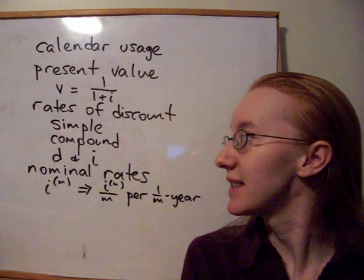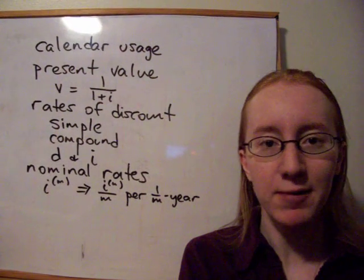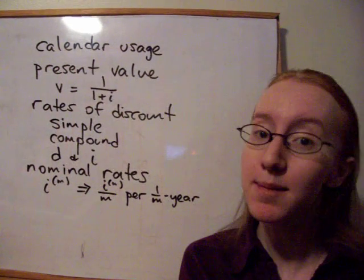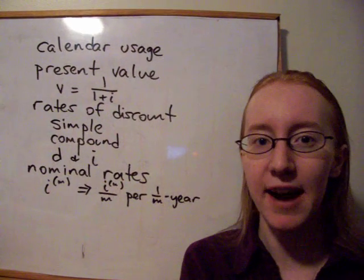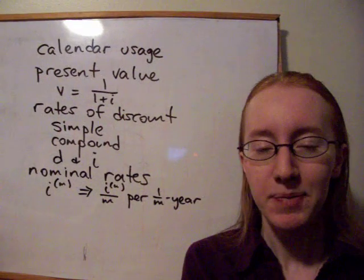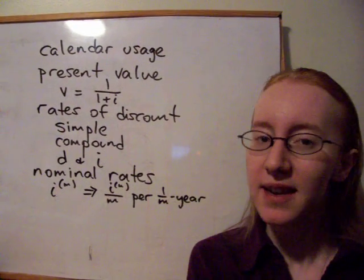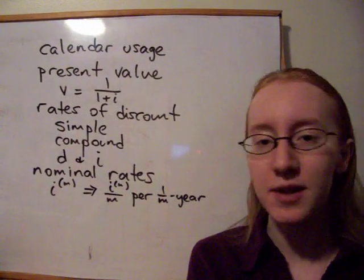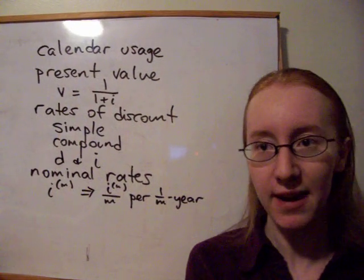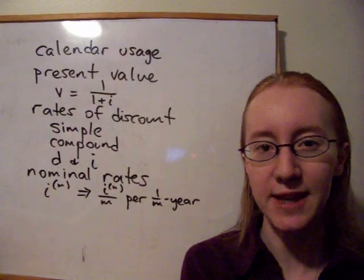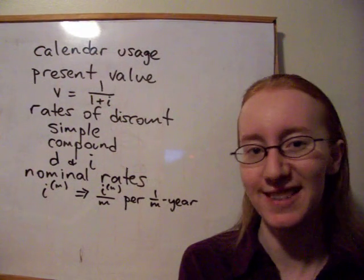So in that case, we have this relationship between D and I, and we actually developed a number of different relationships between D and I, and you have those in your notes. One of the ones that's most common is that D is equal to I times V. So it's I over 1 plus I. That's one of the most common relationships.